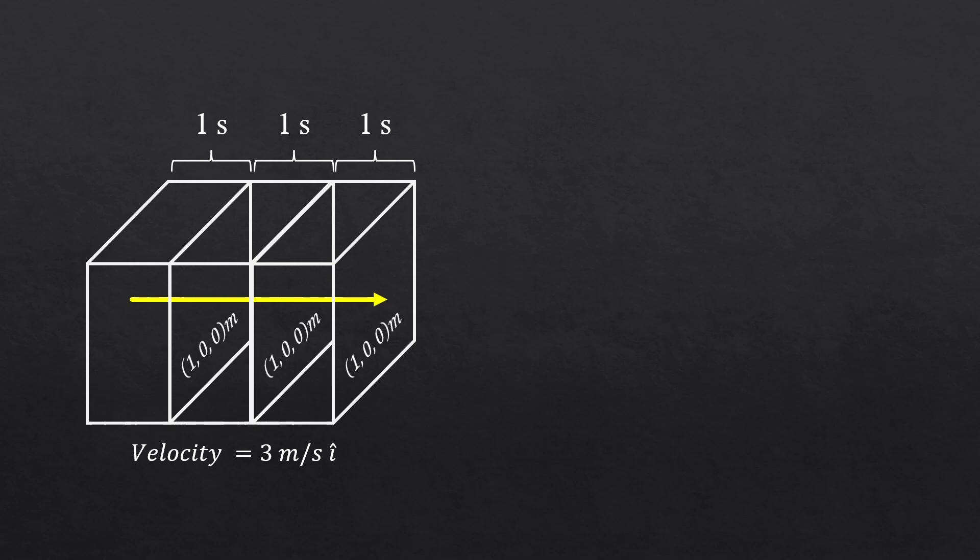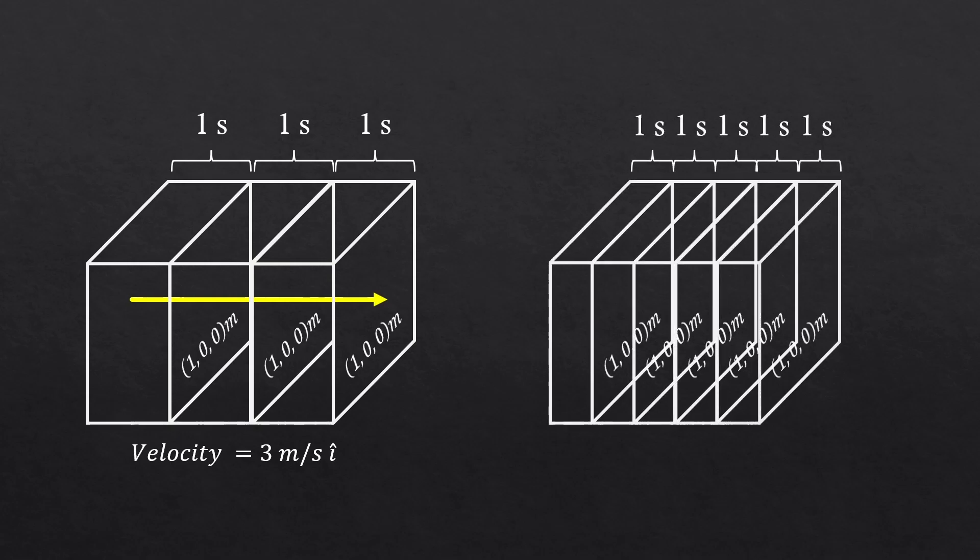But let's say there's another world where the space-time unit boxes look like this. And this vector just visited this world. Now, the vector itself didn't change, but the velocity is 6 meters per second. It is the different space-time scale that increase the vector's velocity.